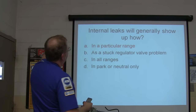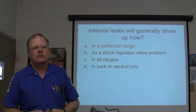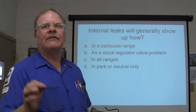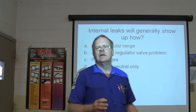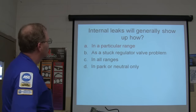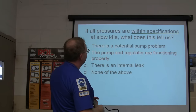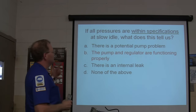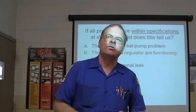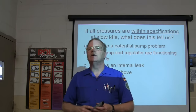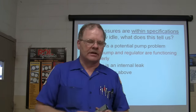Answer: Internal leaks will generally show up in a particular range. If the answer on the paper you're checking is wrong, mark it wrong. Internal leaks will generally show up in a particular range. If all pressures are within specifications at slow idle, that tells us the pump and regulator are functioning properly. Very good — that's a pretty good law of averages there.